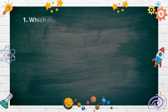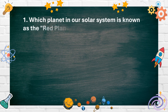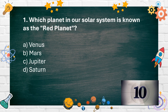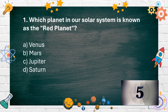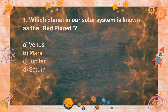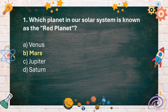Number 1. Which planet in our solar system is known as the Red Planet? A. Venus, B. Mars, C. Jupiter, D. Saturn. The answer is B. Mars.